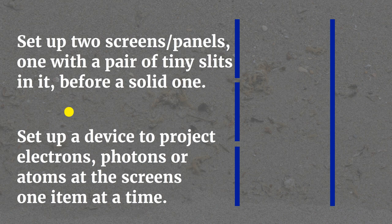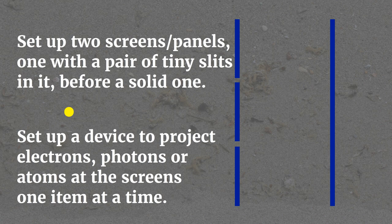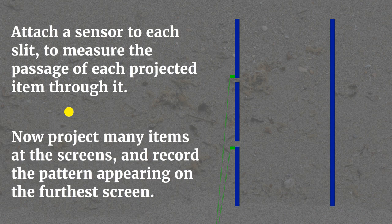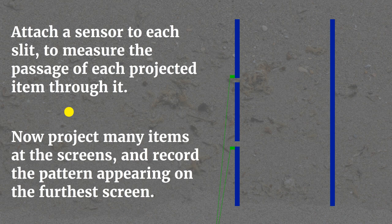Set up a device to project electrons, photons or atoms at the screens one item at a time. Attach a sensor to each slit to measure the passage of each projected item through it. Now project many items at the screens and record the pattern appearing on the furthest screen.